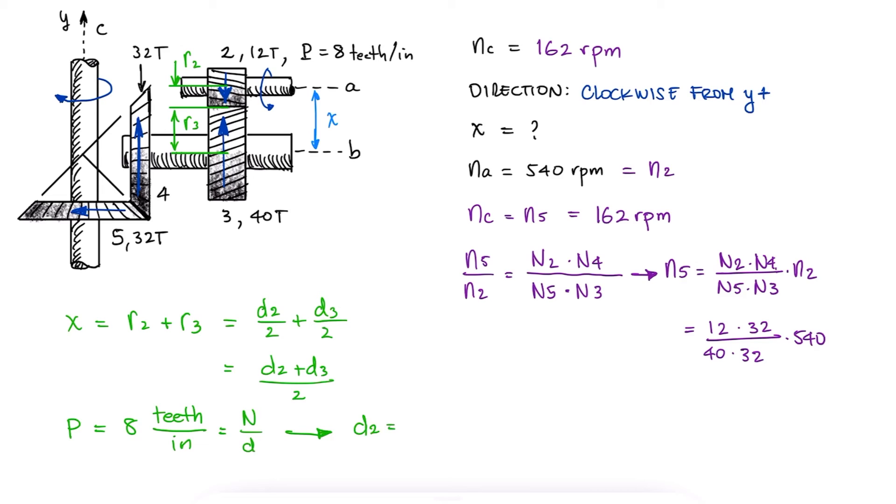We get that the diameter of gear 2 is 1.5 inches, and since the diametral pitch of gear 3 is the same for them to be compatible, the diameter of gear 3 is 5 inches. The distance between shafts is therefore 3.25 inches.